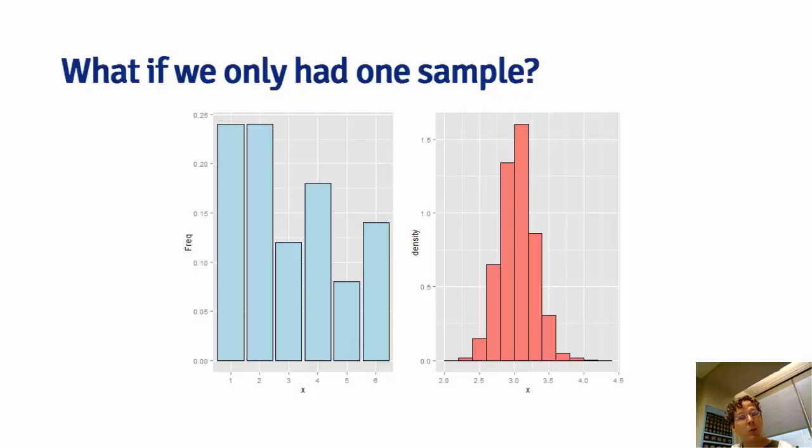So in this case, I would sample from these blue bars with the probabilities related to the heights, and I would do that over and over again, and I would get averages, repeated averages.